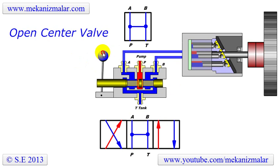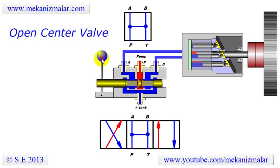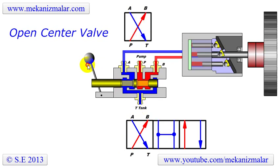On occasion it is called the H-valve, in reference to the four-port connection form in the valve center position. It is seldom used to control hydraulic cylinders, because of the piston drift when the valve is in the center position.